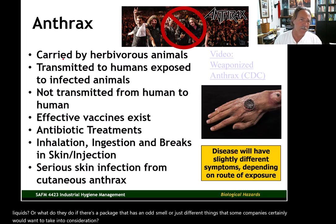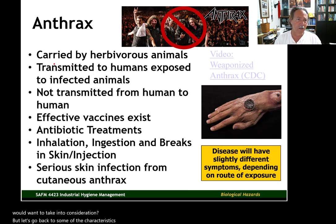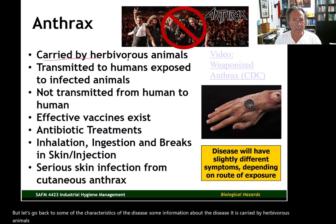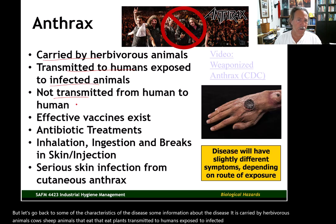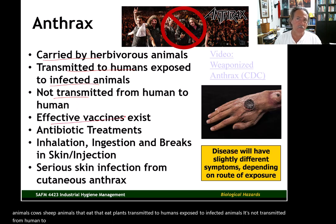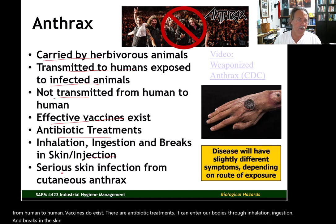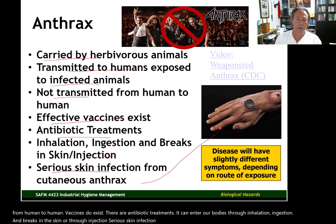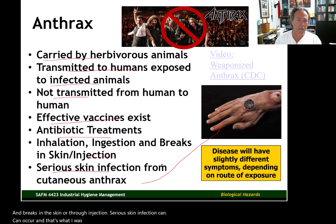Anthrax is carried by herbivorous animals — cows, sheep, animals that eat plants. It is transmitted to humans through exposure to infected animals, and it is not transmitted from human to human. Vaccines do exist and there are antibiotic treatments. It can enter our bodies through inhalation, ingestion, and breaks in the skin or through injection. Serious skin infection can occur — that's the cutaneous form of anthrax.